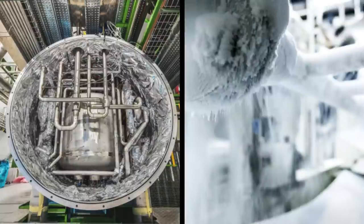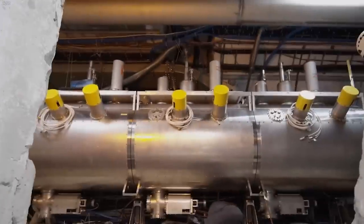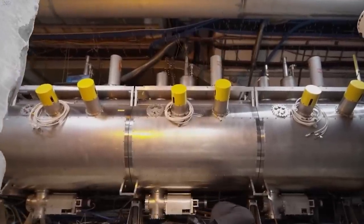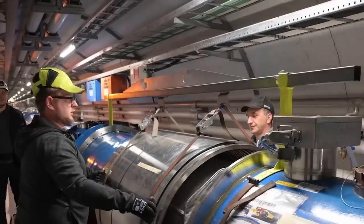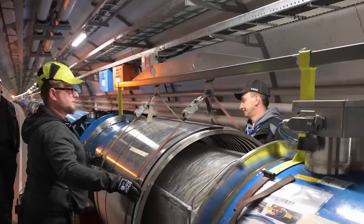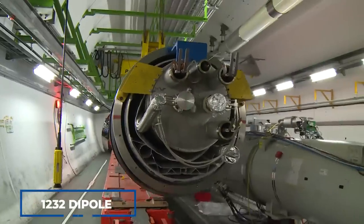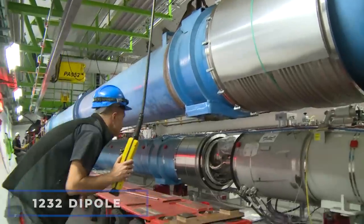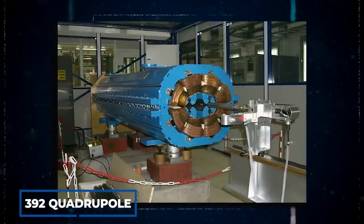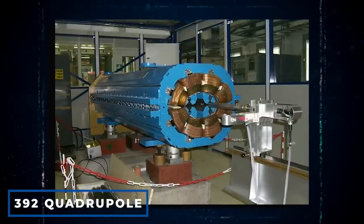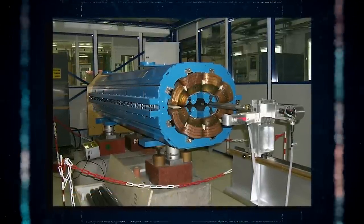As a result, much of the accelerator is linked to a liquid helium distribution system, which cools the magnets as well as other supply services. To steer the beams around the accelerator, thousands of magnets of various types and sizes are used. There are 1,232 dipole magnets, 15 meters long, that bend the beams, and 392 quadrupole magnets, 5 to 7 meters long, that focus the beams.